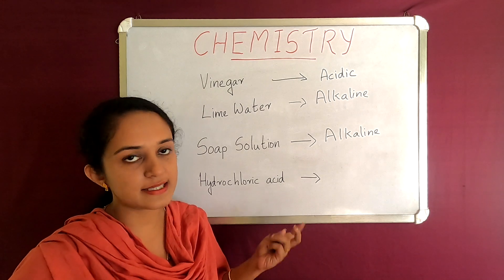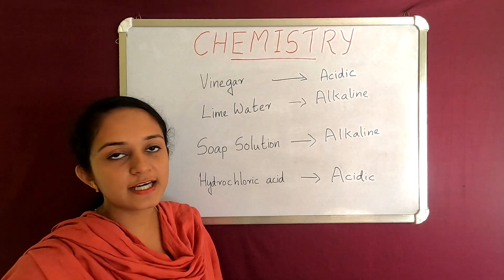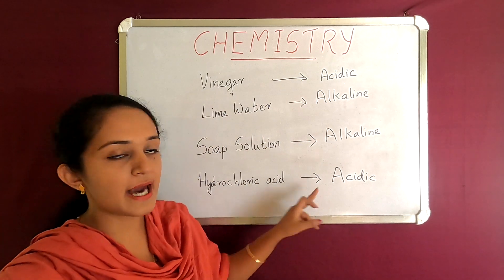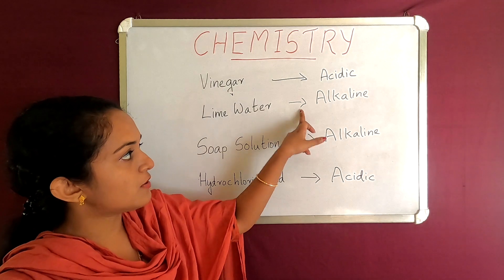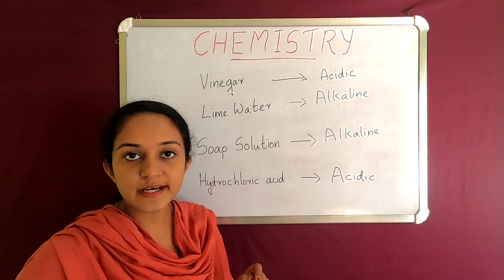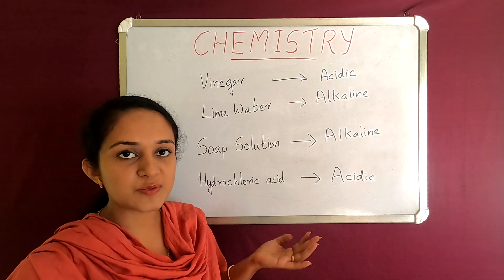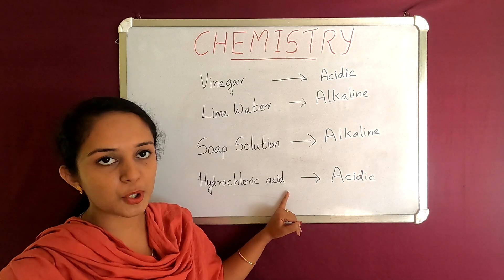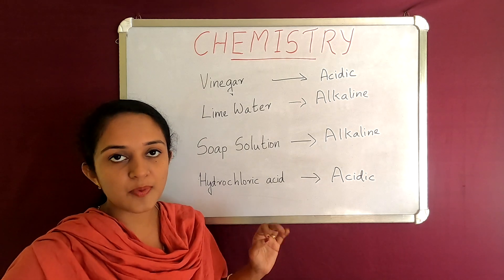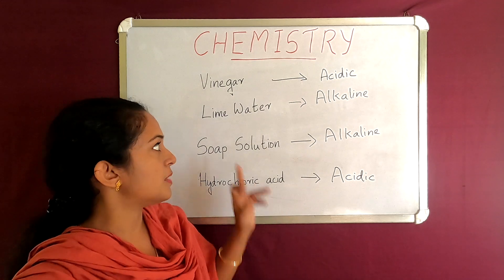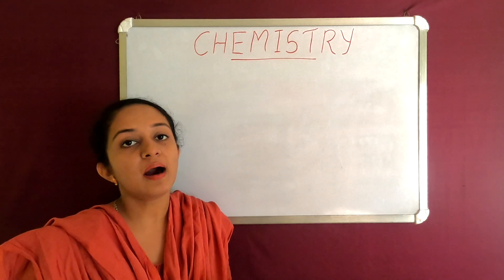And last, hydrochloric acid. It will change the blue litmus paper to red. These alkaline substances like lime water and soap solution change the red litmus paper to blue color. Color change to blue means it's an alkaline substance — lime water, soap solution. In the litmus test, the acid and alkaline substances are identified.